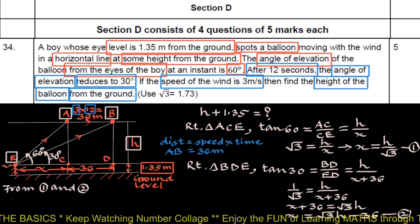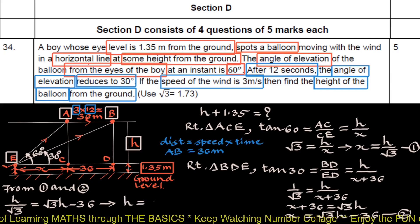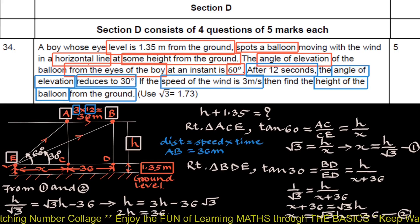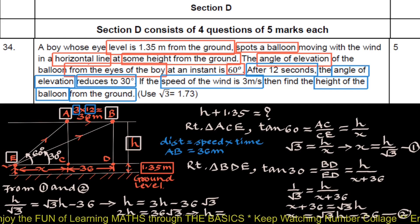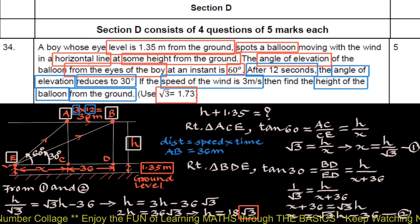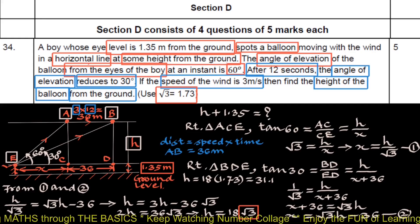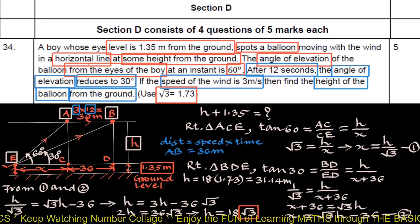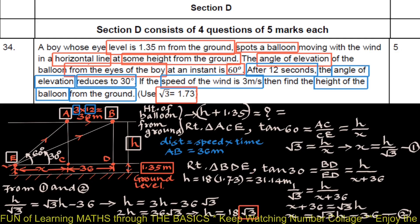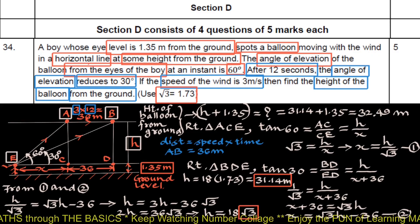From equations 1 and 2: H/√3 = √3·H - 36. Cross multiplying: H = 3H - 36√3, so 2H = 36√3, giving H = 18√3. Putting √3 = 1.73, H = 18 × 1.73 = 31.14 meters. Therefore, height of the balloon from the ground = H + 1.35 = 31.14 + 1.35 = 32.49 meters.